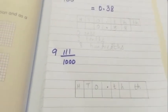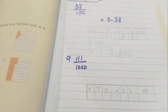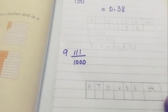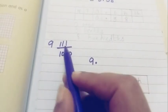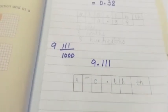Similarly, the next example is 9 and 11/1000. Again, you can't write this directly in the place value chart. First we will change it to a decimal. 1000 has three zeros, so we need three decimal digits — giving us 9.011: the whole number 9, decimal point, then 011.